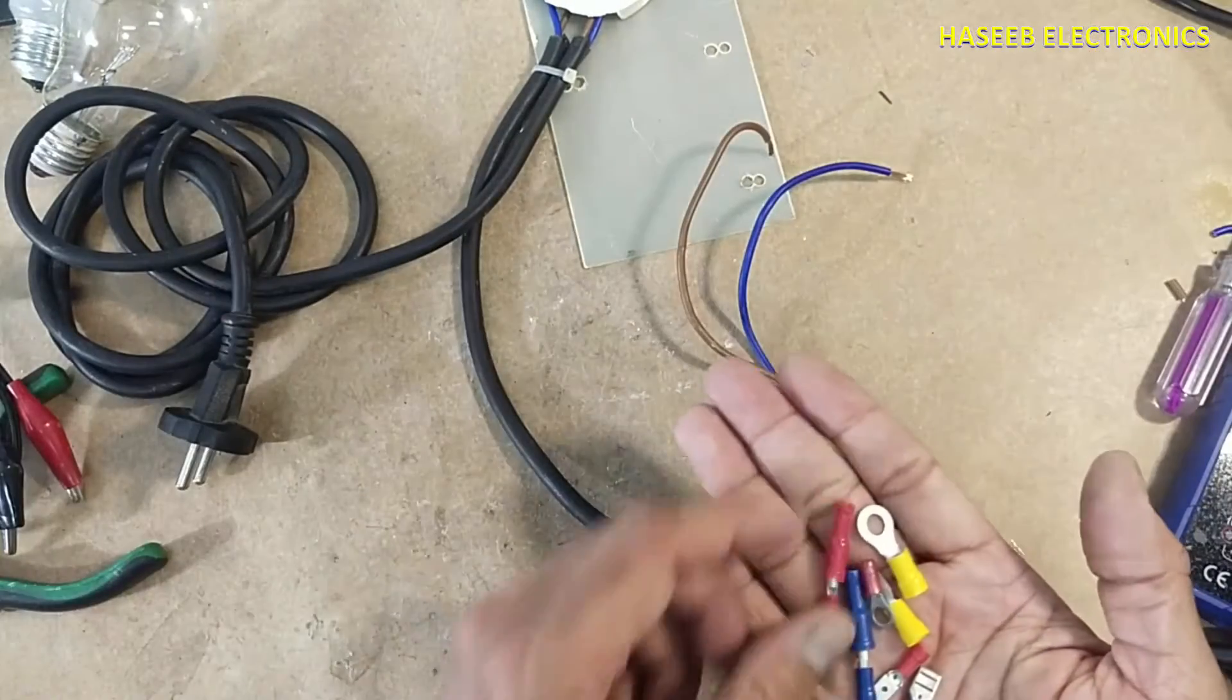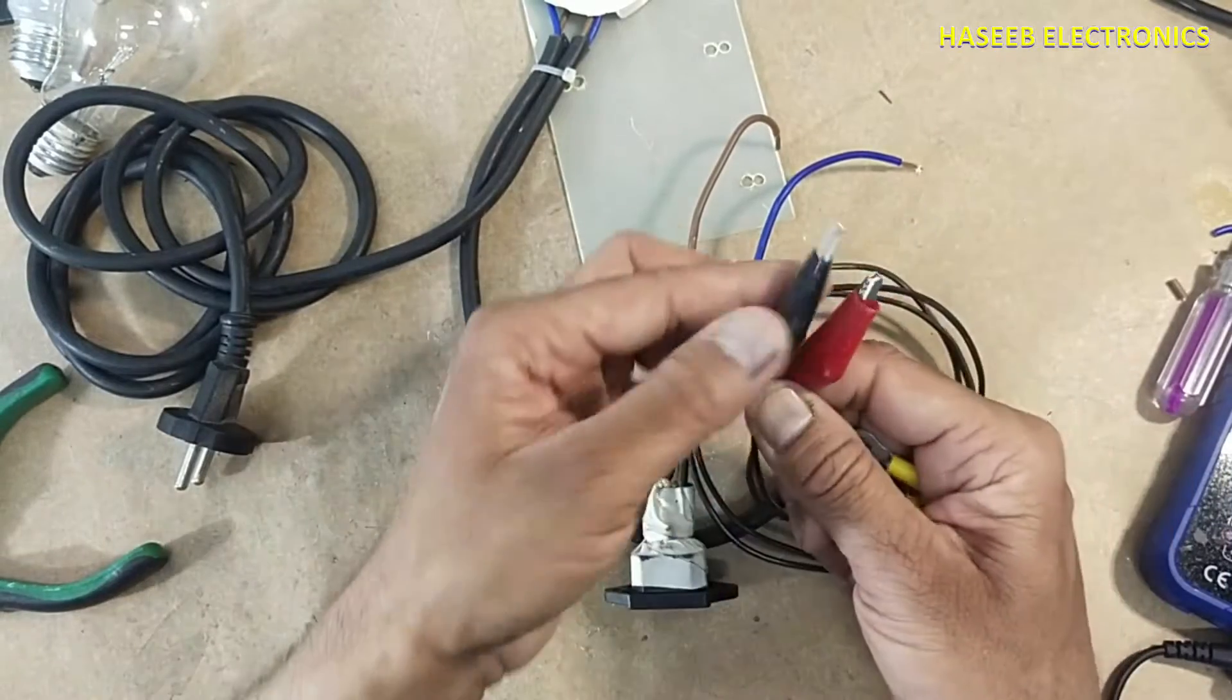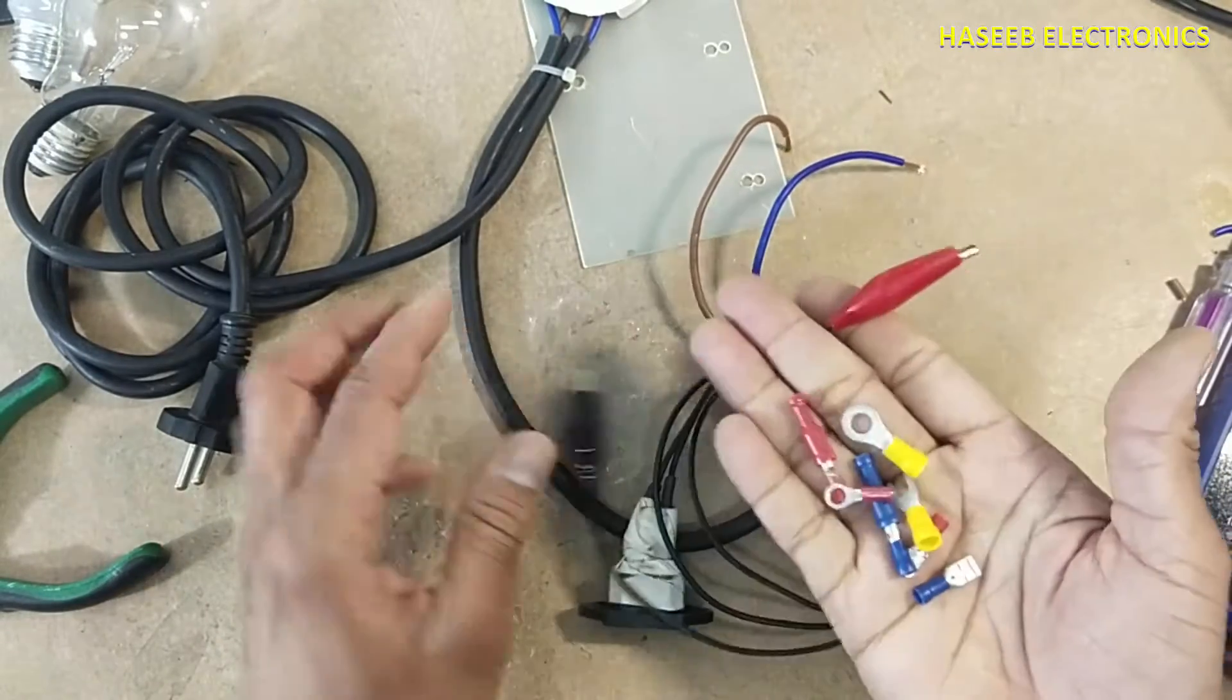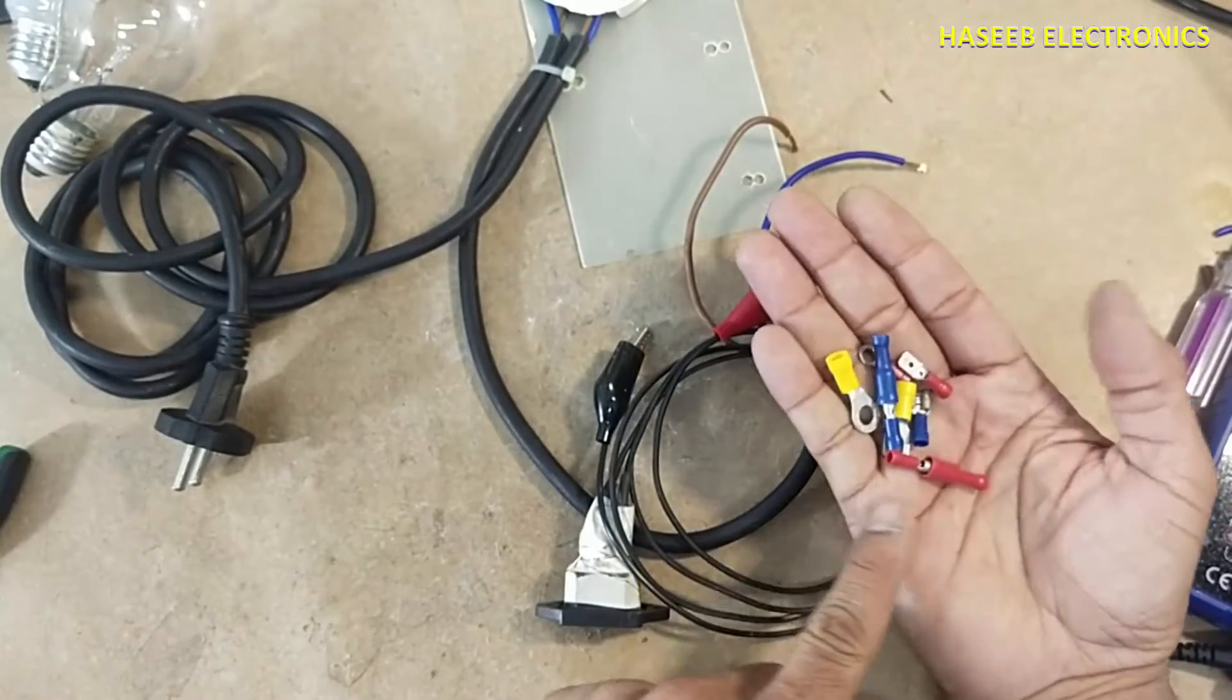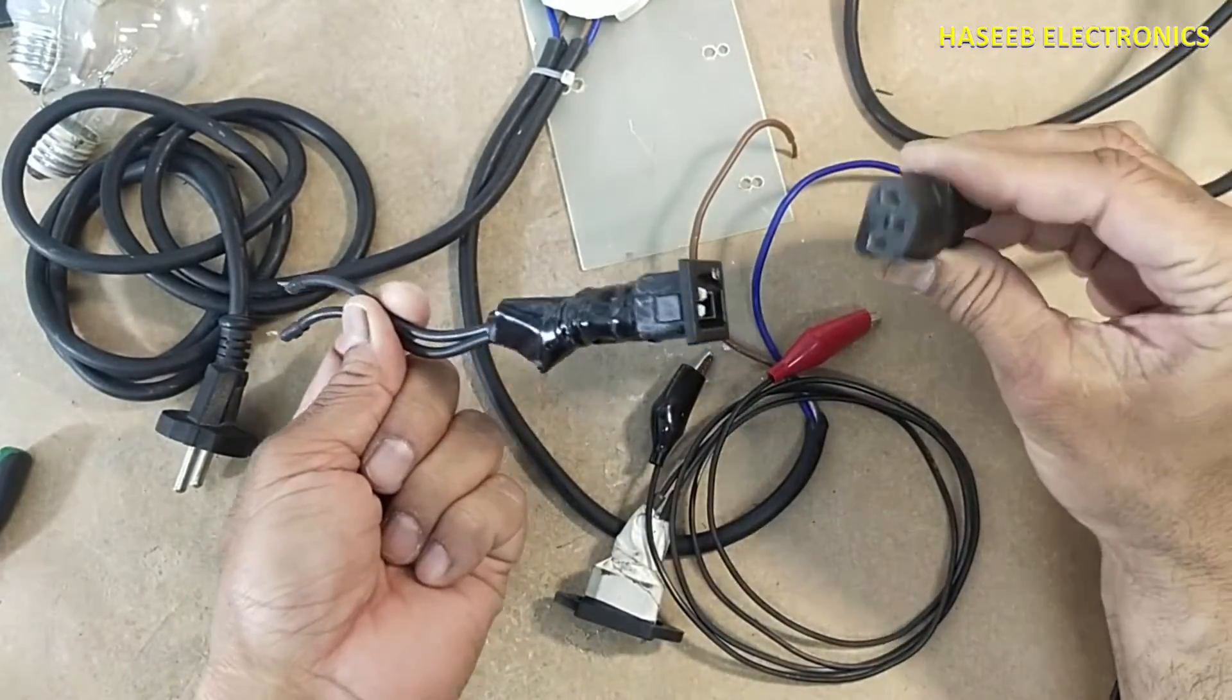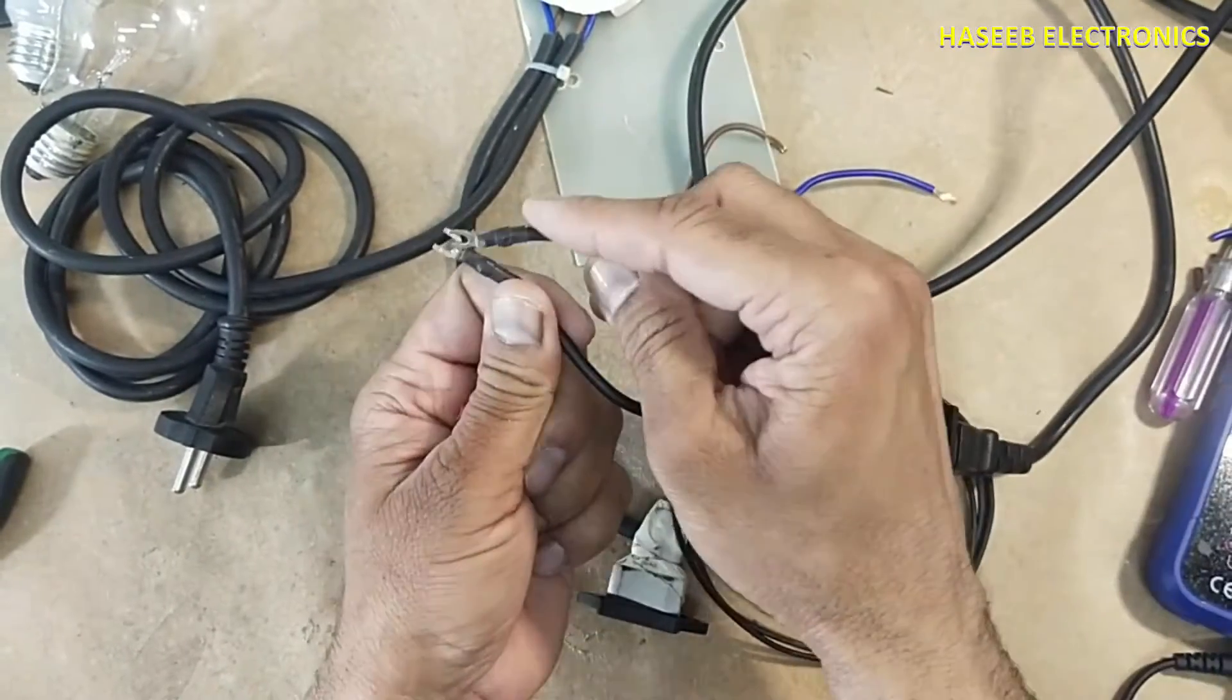Now you can install connectors as per your requirement - like crocodile clips, spade connectors, or thimbles. It depends on your requirement. If you make it using this cable, you can install them in front of this, and the test lamp is ready.